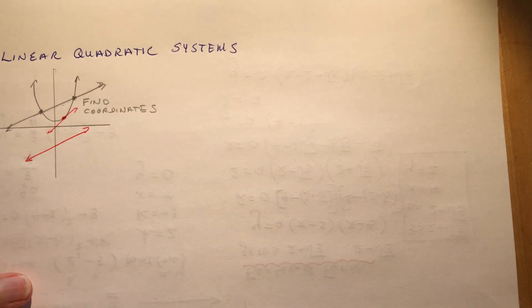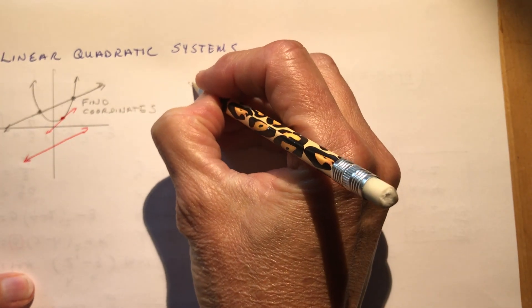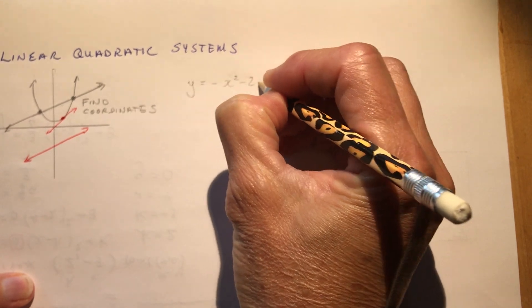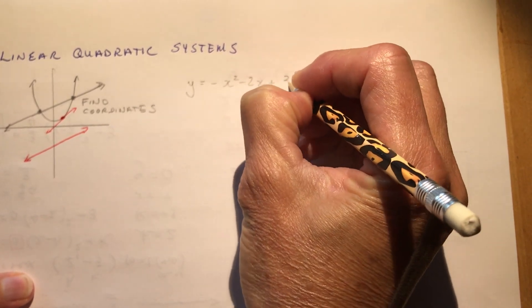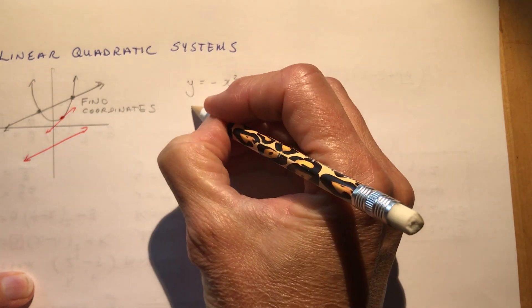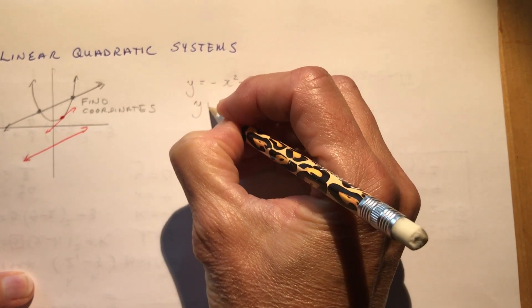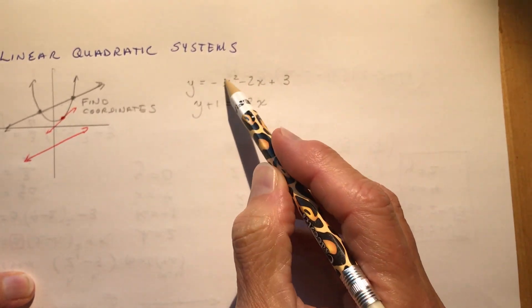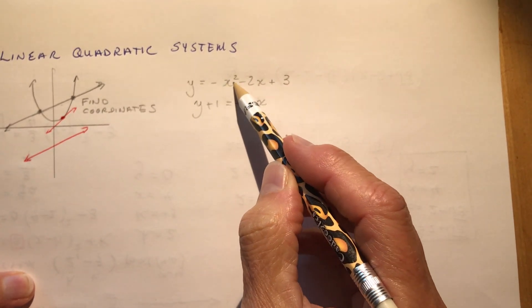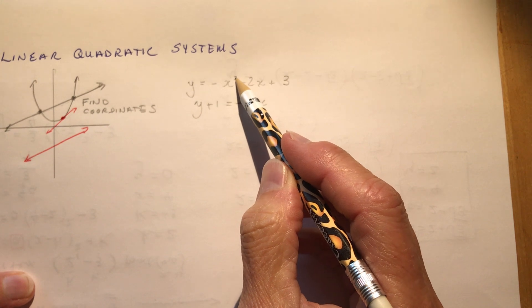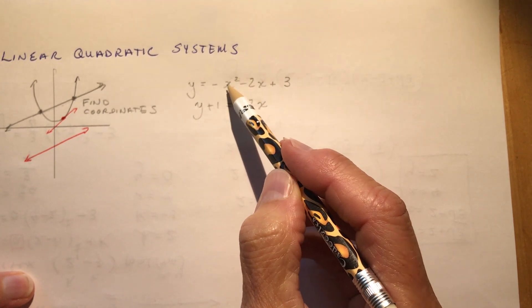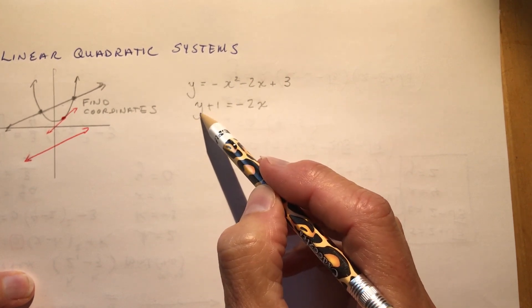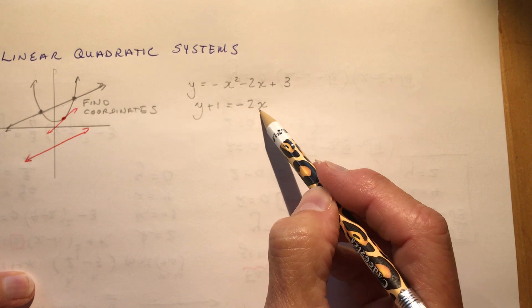Well if you have two equations, let's say I give you this equation here. So I'm going to give you minus x squared minus 2x plus 3. And I have another equation and it's going to say y plus 1 is equal to minus 2x. So you can see from this that I have a quadratic equation here, denoted by the square, right? The square means second degree, quadratic. And this is a linear function, y plus 1 equals minus 2x.